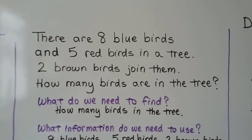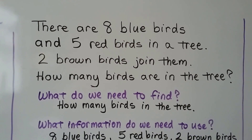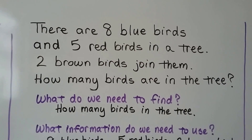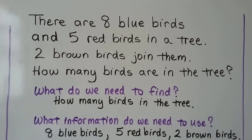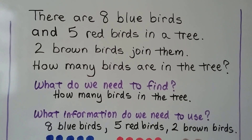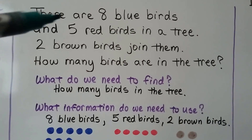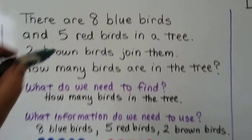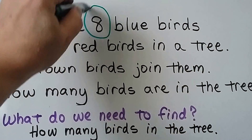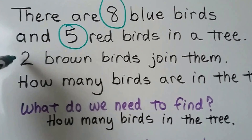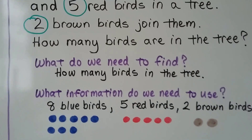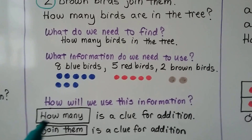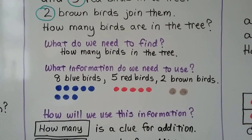There are eight bluebirds and five redbirds in a tree. Two brownbirds join them. How many birds are in the tree? What do we need to find? We need to find how many birds are in the tree. What information do we need to use? We need eight bluebirds, five redbirds, and two brownbirds — eight, five, and two. How many and 'join them' is a clue for addition.